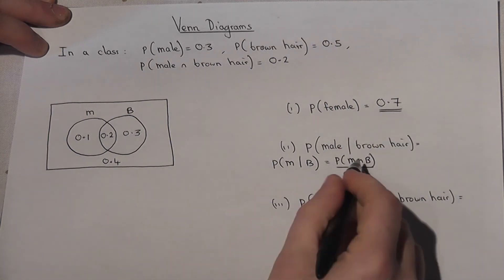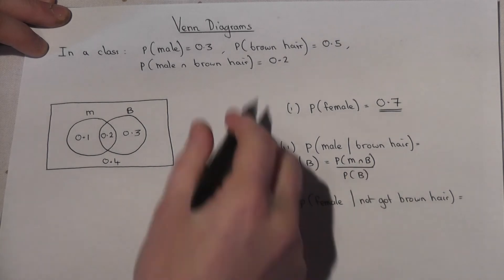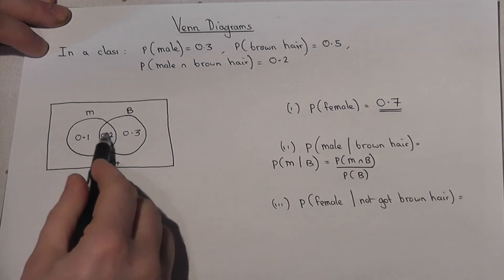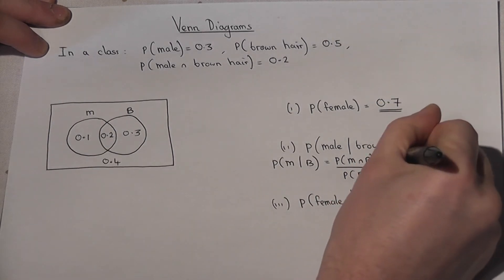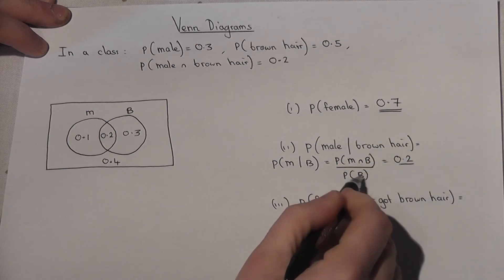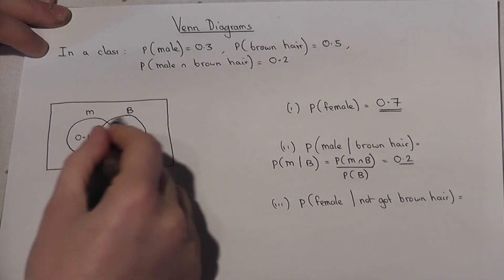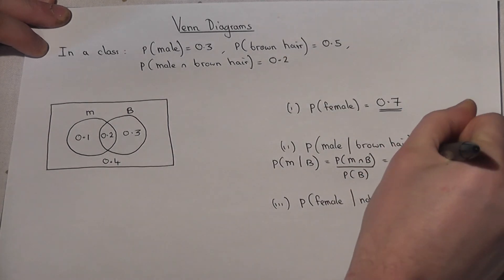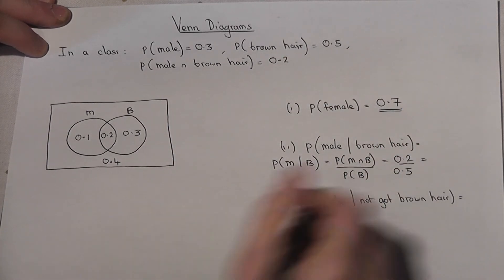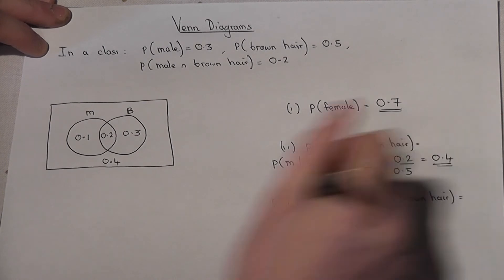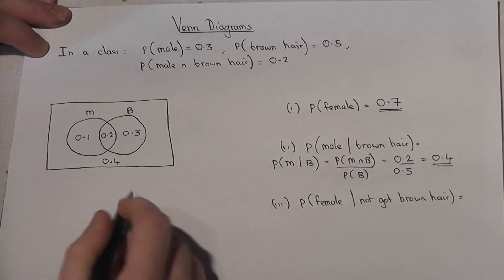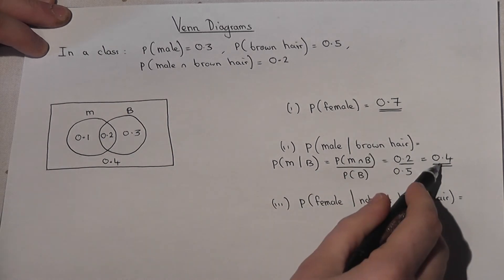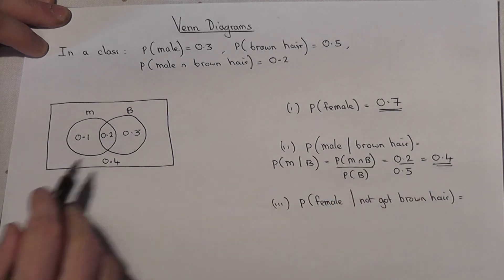Well the chance of male and brown hair given to us 0.2 is the overlap. The chance of being brown hair is that circle again, given to us 0.5, so work that out you get 0.4. So if you know the person has brown hair, there is a 0.4 chance of that person being male.